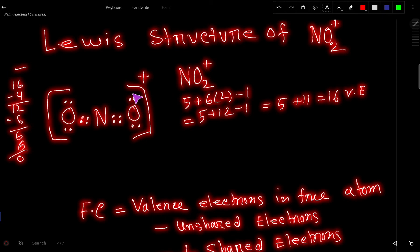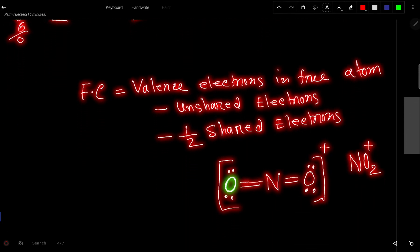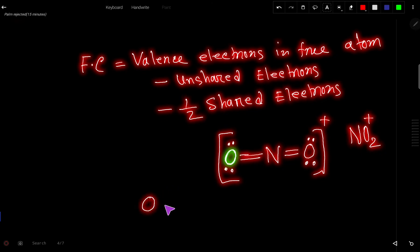The formal charge equals valence electrons in the free atom minus unshared electrons minus half of shared electrons. This is the best formula for finding formal charge from a Lewis structure. To find the formal charge for oxygen: oxygen is in group 6A, so it has six valence electrons in the free atom.